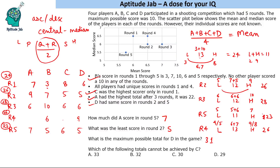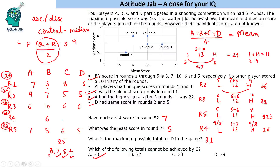For the question about which total cannot be achieved by C: C's known scores sum to 25 (8 + 6 + 6 + 6 in the known rounds). To reach various totals, C needs a certain Round 4 score. C can score 4 (total 29), 5 (total 30), or 7 (total 32) in Round 4. However, C cannot score 8 in Round 4 because that would make C the highest scorer in that round too — but C was the highest scorer only in Round 1. So a total of 33 is not achievable by C.